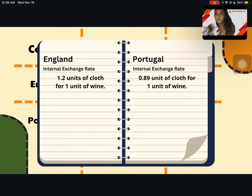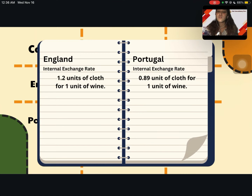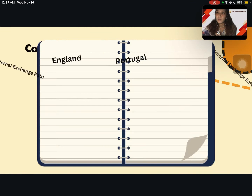If Portugal trades 1 unit of cloth for 1 unit of wine with England, it would be beneficial for both. From Portugal's perspective, it was paying 1 unit of wine and getting 0.89 units of cloth, but now it gets 1 full unit of cloth. From England's perspective, it had to give 1.2 units of cloth for 1 unit of wine, but now it just has to give 1 unit of cloth. So both countries win from this trade.